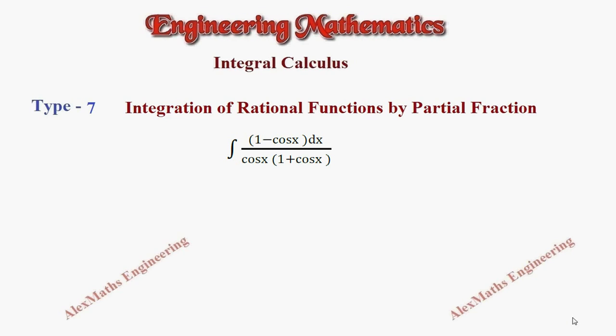Hi students, this is Alex. In this video we're going to solve an integration problem by partial fraction. We notice there is cos x everywhere, so let's take t equal to cos x, but we cannot use dt because we don't have sine x. Now integration: 1 minus t in the numerator, and denominator is t into 1 plus t, and we have dx.